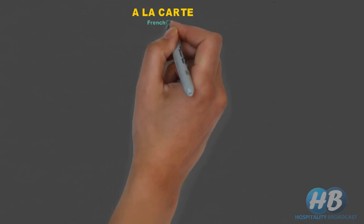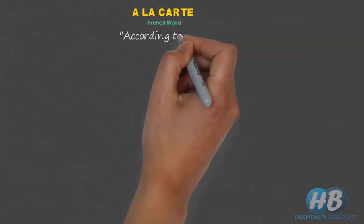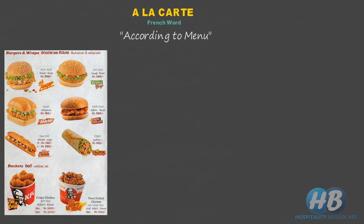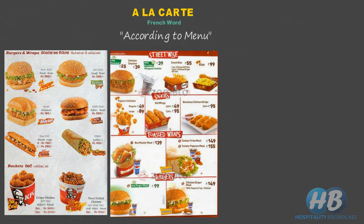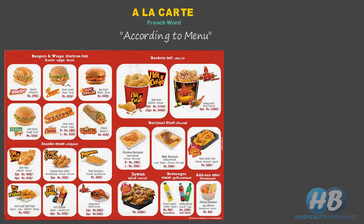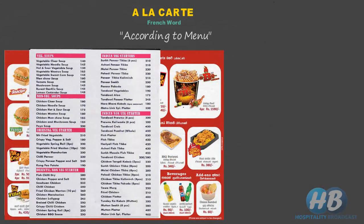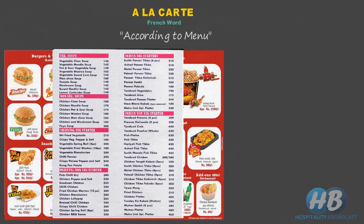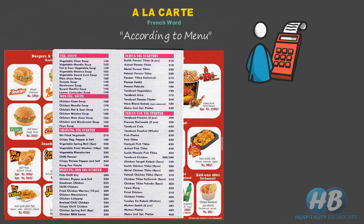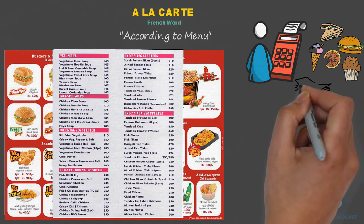À la carte is a French word which means according to menu. In an à la carte menu there are a variety of dishes available, each dish priced separately. A restaurant may offer several categories of food and each category will offer a wide selection of dishes. The bill will be prepared according to the dishes ordered by a customer, so the customer can pick or choose any available dish he likes and pay accordingly.